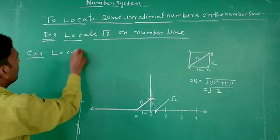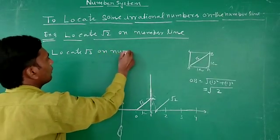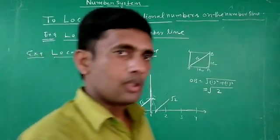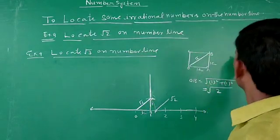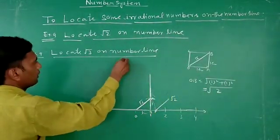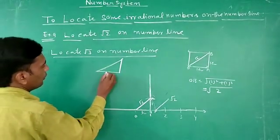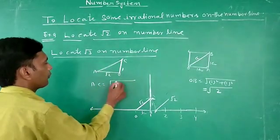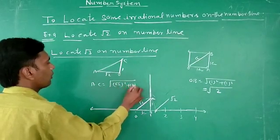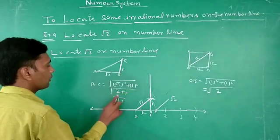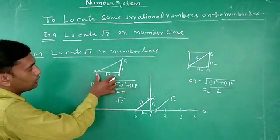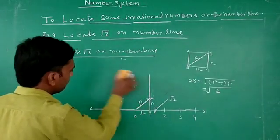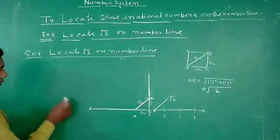Next, locate root 3 on the number line. You can use the Pythagoras theorem. This existing length is root 2. Using Pythagoras theorem: root 2 squared plus 1 squared equals 2 plus 1, which gives root 3. So root 2 is used as one side, and 1 is the other side, giving root 3.